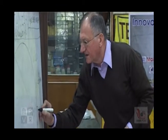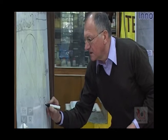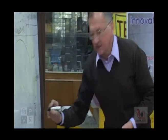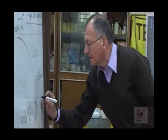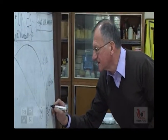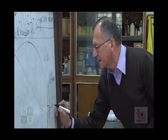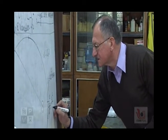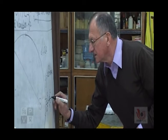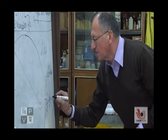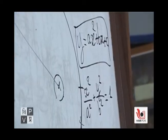Then, x squared upon a squared plus y squared upon b squared equals 1.